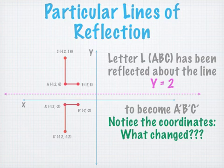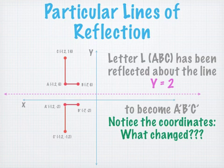Similarly, we have something you may not be too familiar with, so pay particular attention. This one asks you to reflect a pre-image around a line — not the X axis or the Y axis, but a different line. The line is called Y equals 2, designated in pink. Y equals 2 is parallel to the X axis and crosses the Y axis at the point 2.